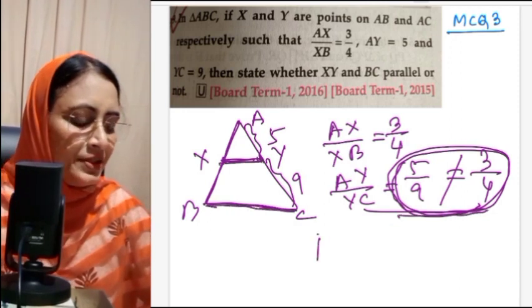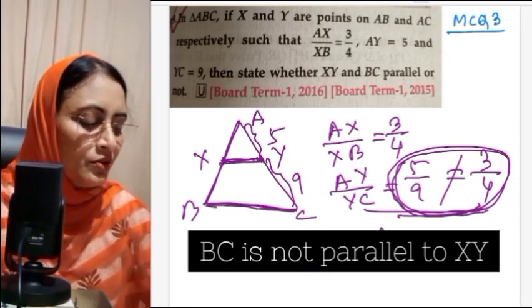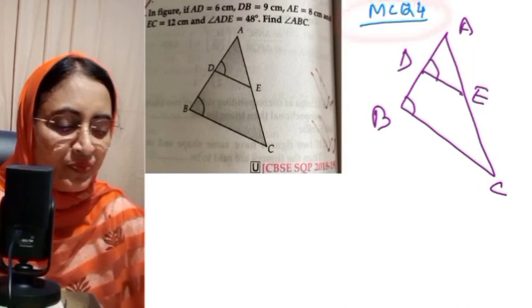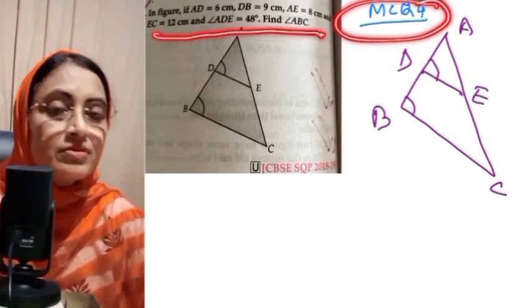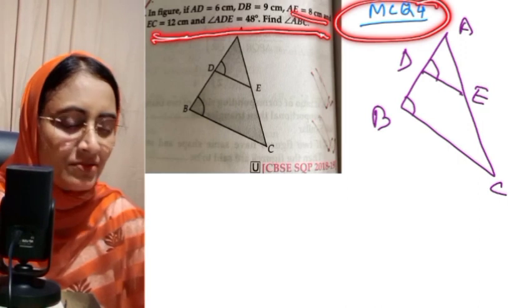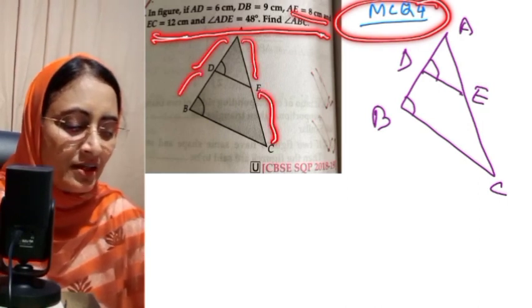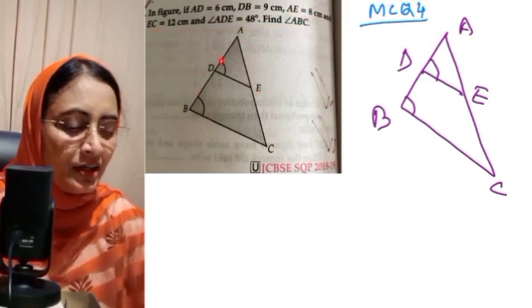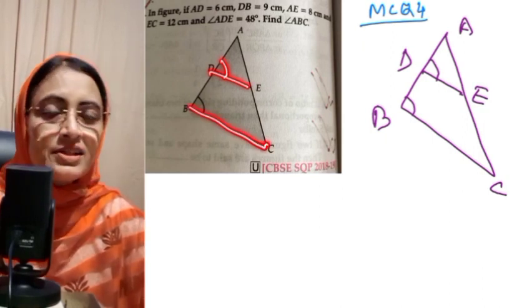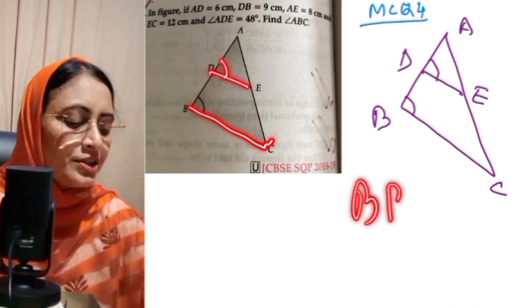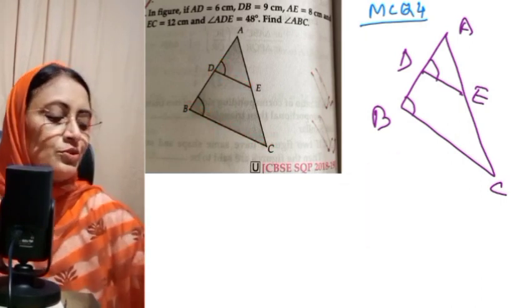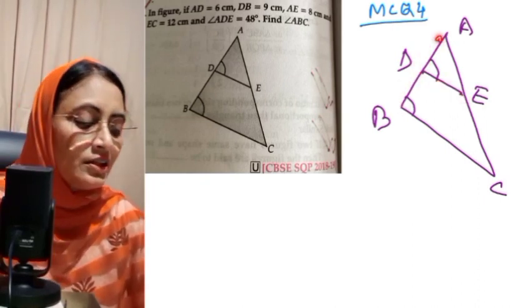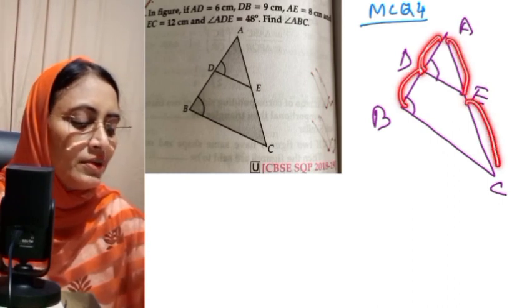Since the ratios are not equal, BC is not parallel to XY — the criteria is not fulfilled. Therefore BC is not parallel to XY. MCQ number 4: in the figure, AD equals 6 cm, DB equals 9 cm, AE equals 8 cm, and EC is unknown. We need to determine whether BC is parallel to DE, using the converse of BPT: AD/BD equals AE/EC.